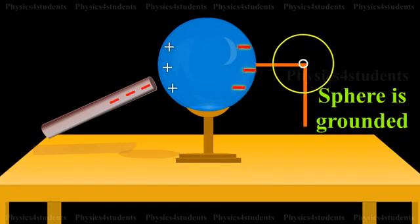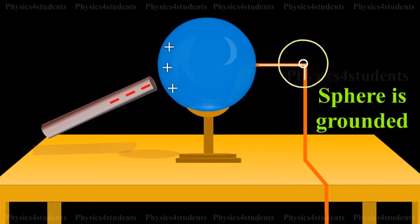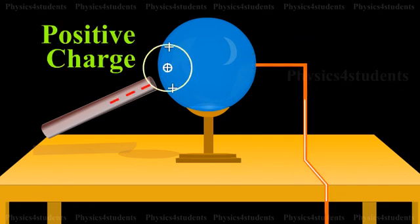When the sphere is grounded, the negative charge flows to the ground. The positive charge at the near end remains held due to the attractive forces.